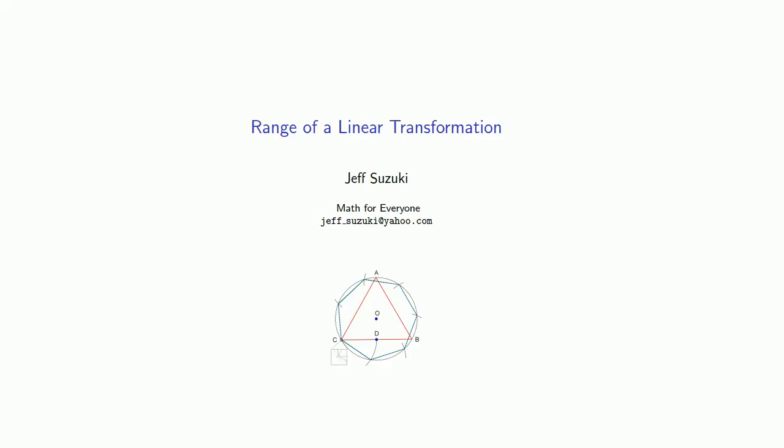Another important feature of a linear transformation is called its range, and this has the same meaning that it has when dealing with functions. Given any linear transformation that sends one vector v to another vector u, the range consists of all possible output vectors u.